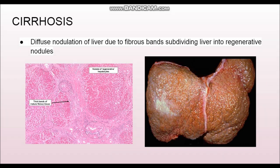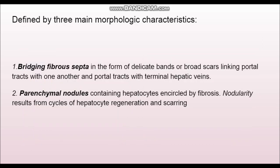Now going to the defining features of cirrhosis — it is defined by three main morphological characteristics. First is the bridging fibrous septa. For the liver to be considered cirrhotic, there has to be bridging fibrous septa. This septa can bridge from portal vein to portal vein, portal vein to central vein, or central vein to central vein.